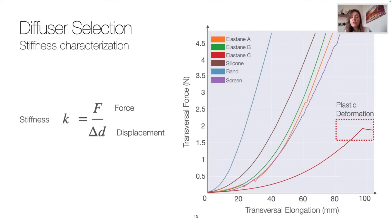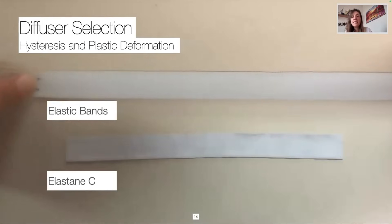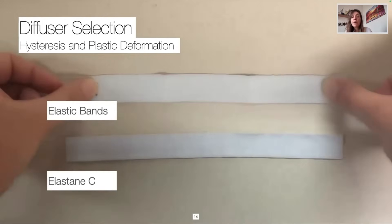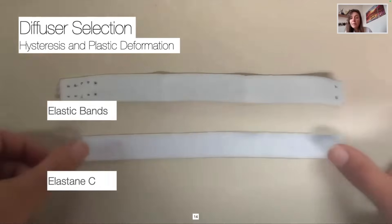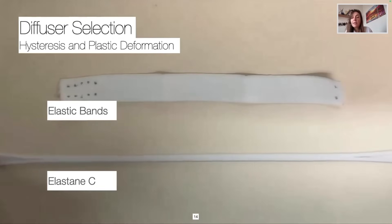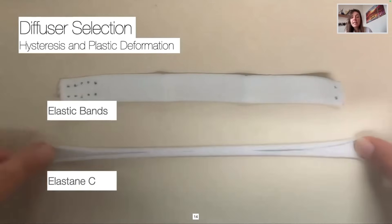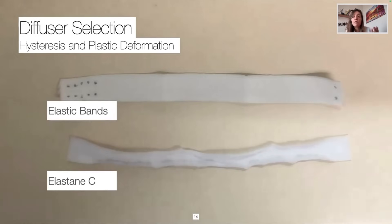The stiffness characterization was performed only once, but from the plastic deformation we noted, we decided to test our samples for hysteresis and whether they entered into plastic deformation. Basically, here with the elastic bands, when extended longitudinally, we can see that the material goes back smoothly. But with elastin, the fabric gets irreversibly deformed and its sides even twirl and change its global shape.